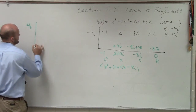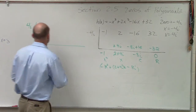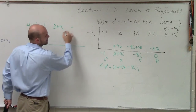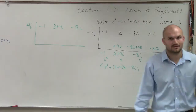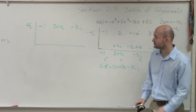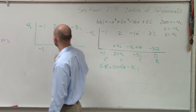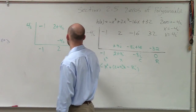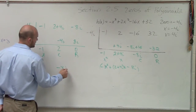I'll do 4i. I'll take the coefficients of this term, which are negative one, two plus 4i, and negative 8i — those are the coefficients of my quotient factor. Now let's do synthetic division again. Bring down the negative one. Negative one times 4i is negative 4i. Two plus negative 4i is two. Two times 4i is 8i, which gives zero. So the result is negative x plus two.